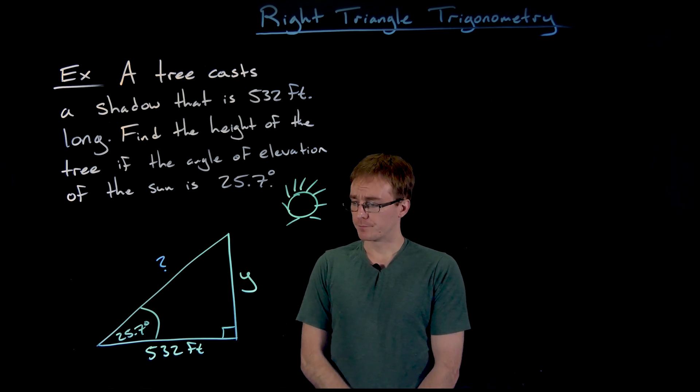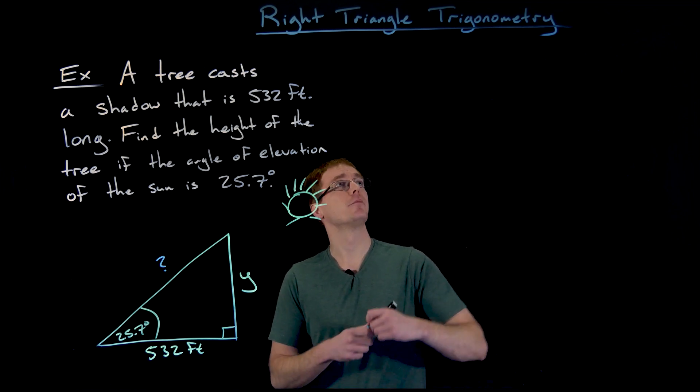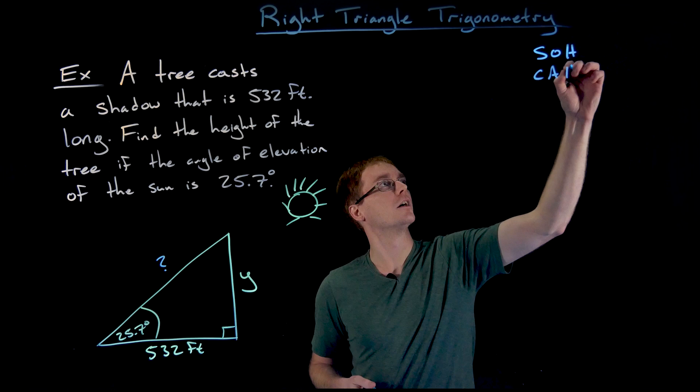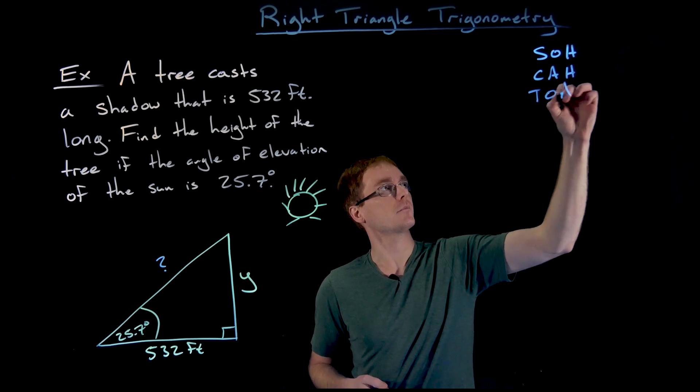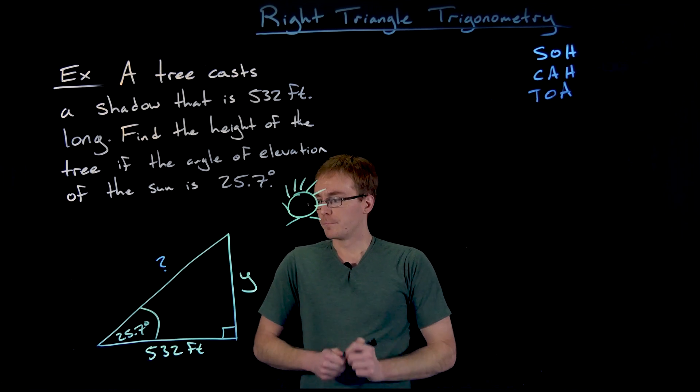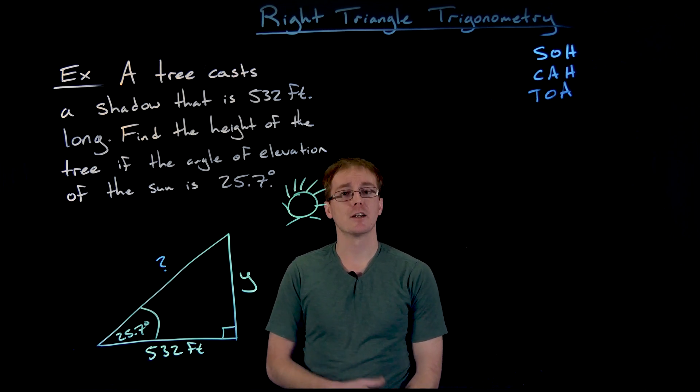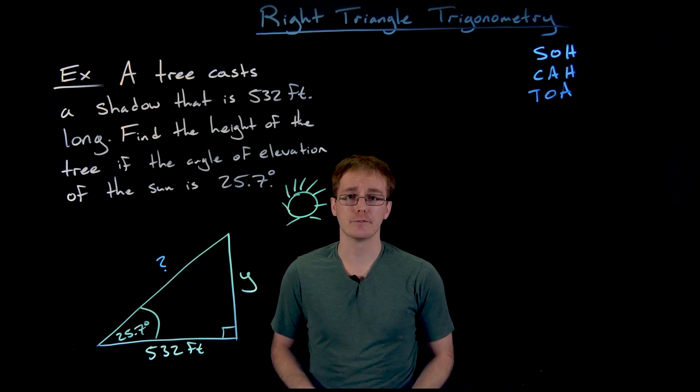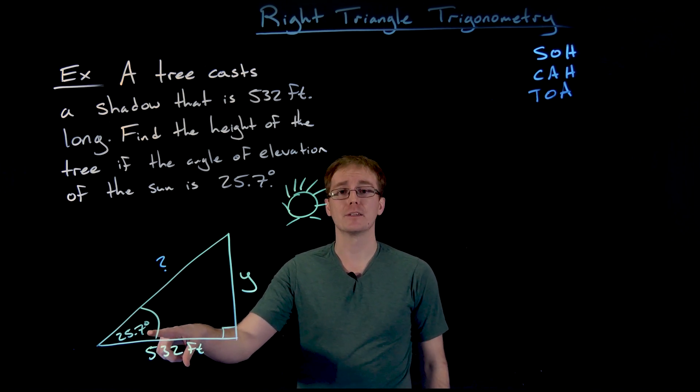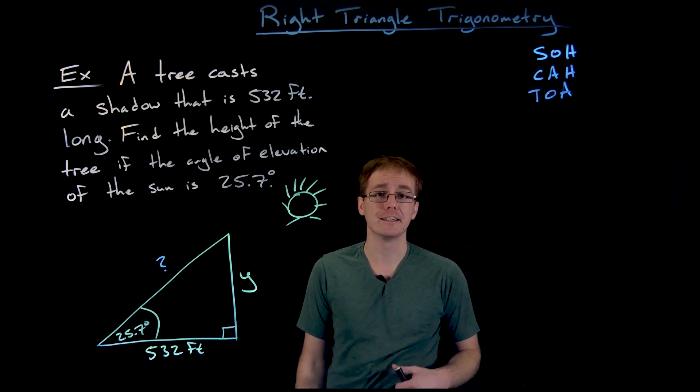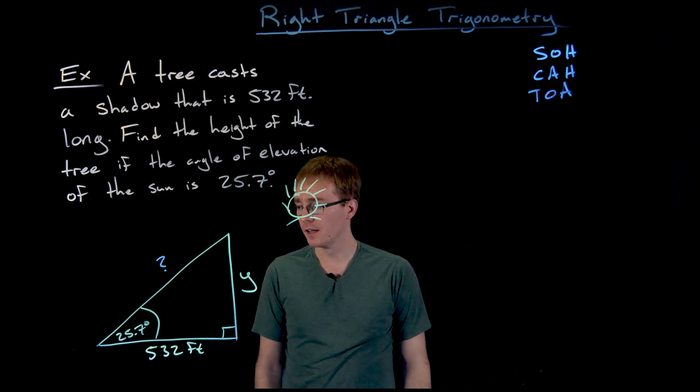So what else do we know? Well, we know our trig functions. Easy way to remember them is SOHCAHTOA. Let's see. Can any of these trig functions help us in this problem? Well, let's go ahead and maybe try to recategorize or label our information. So 25.7 degrees is our angle of interest. Maybe that's like the angle that we would plug into one of our trig functions.